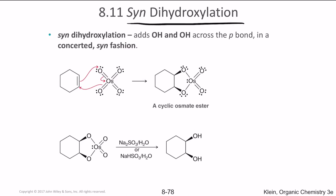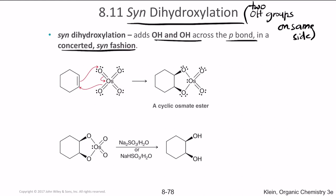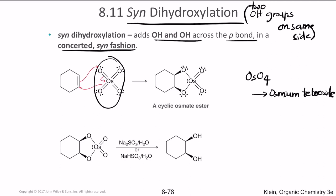Next, syn-dihydroxylation, where the OH groups are on the same side. We add OH and OH across the pi bond in a concerted and syn fashion. The reagent used is osmium tetroxide (OsO4). The alkene attacks one of the oxygens of OsO4, and the double bond attacks one of the carbons — when both happen simultaneously, it creates a cyclic osmate ester. This ester, in the presence of sodium sulfate or sodium bisulfate, gives the syn product.